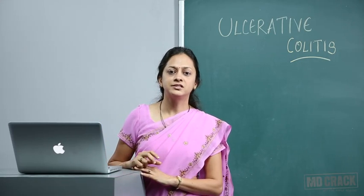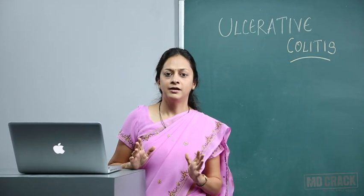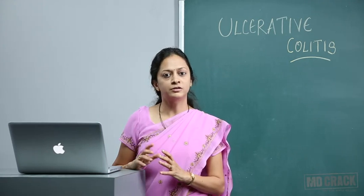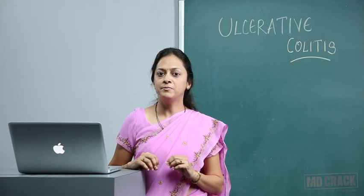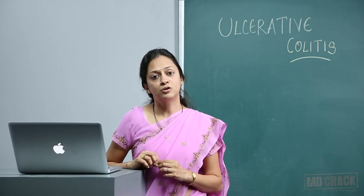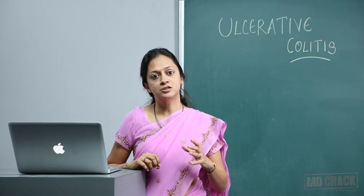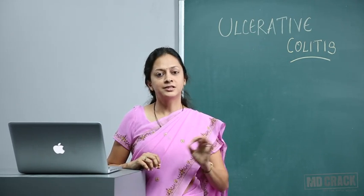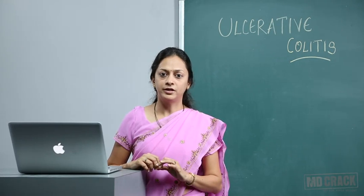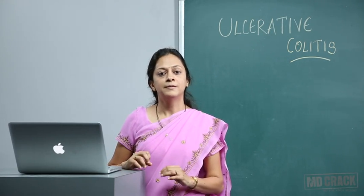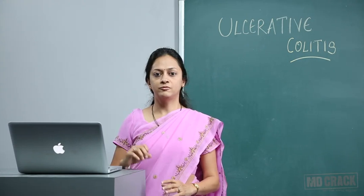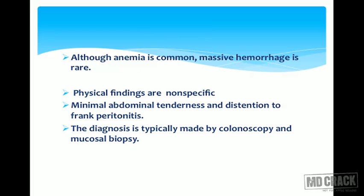In fulminant colitis, a section of colon — usually the transverse colon — may become acutely dilated with the risk of perforation, and this is known as toxic megacolon. Toxic megacolon is when the colon becomes enlarged and is on the verge of perforating, basically seen in ulcerative colitis. Although anemia is common, massive hemorrhage is rare.